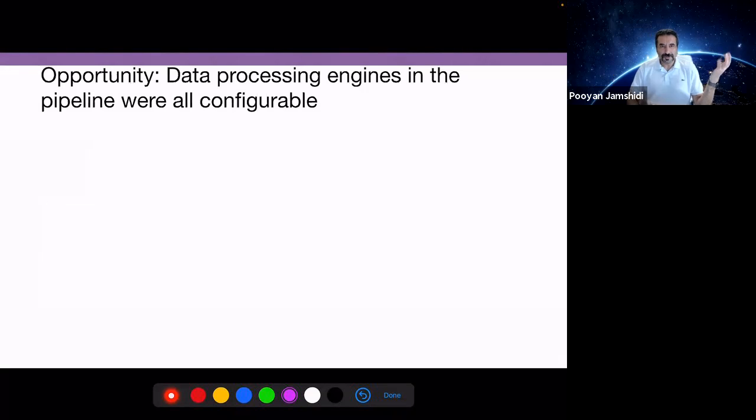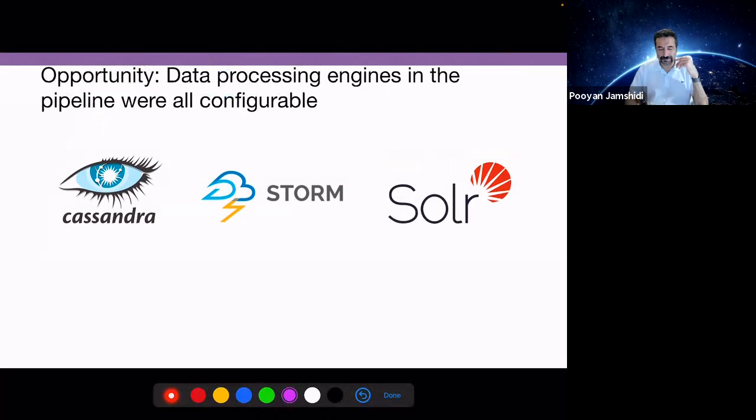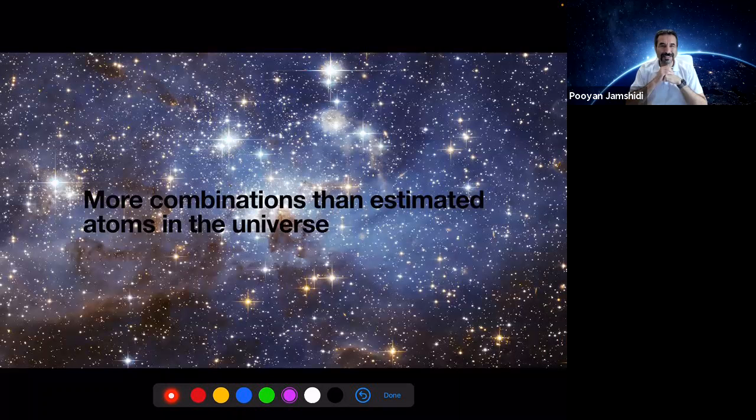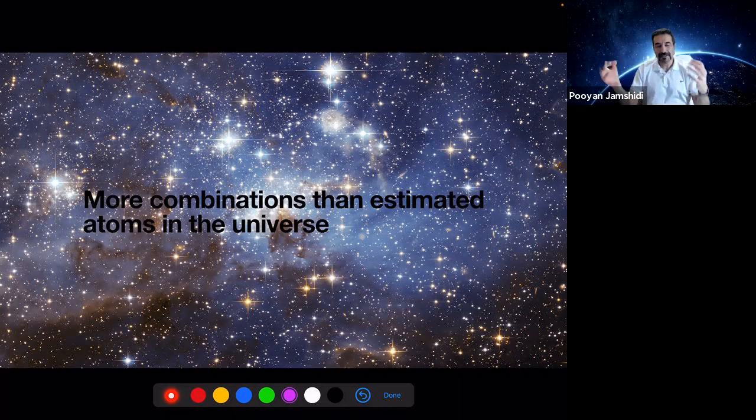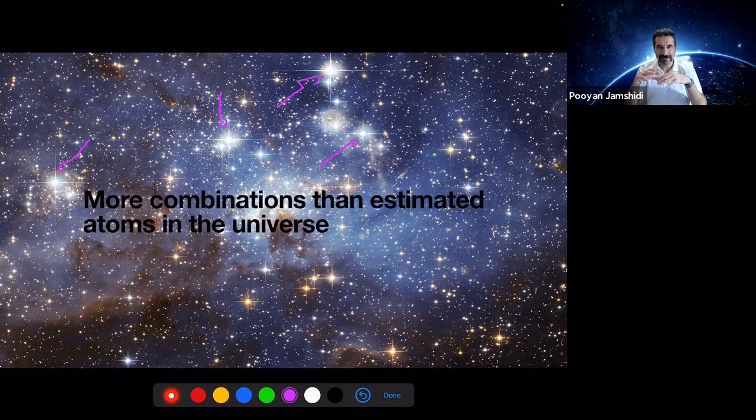We have Apache Cassandra, Storm, and Apache Solr. These are big data engines, all highly configurable, exposing many different configuration options. If each exposes 100 binary options, the total number of configurations for this composed system consists of 2 to the 300 different configurations. This number is more than the estimated number of atoms in the universe. It's difficult to reason about performance within this massive configuration space.